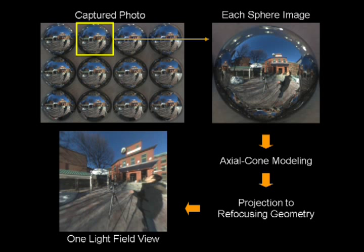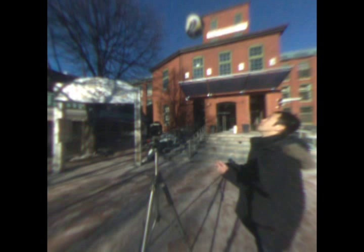we can directly use texture mapping for refocusing. Here is a captured photo of a 4x3 spherical array. Each sphere image is modeled with axial cone cameras, which are projected to the refocusing geometry to generate a light field view.